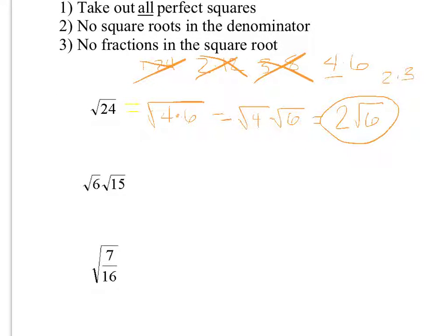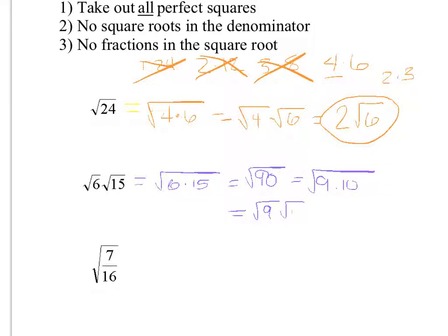The next one is the square root of 6 times the square root of 15. Neither is a perfect square, so multiply them together: 6 times 15 is 90. Now find a perfect square in 90—that's 9. Write it as the square root of 9 times 10, split into square root of 9 times square root of 10. Square root of 9 is 3, so the answer is 3 square roots of 10.